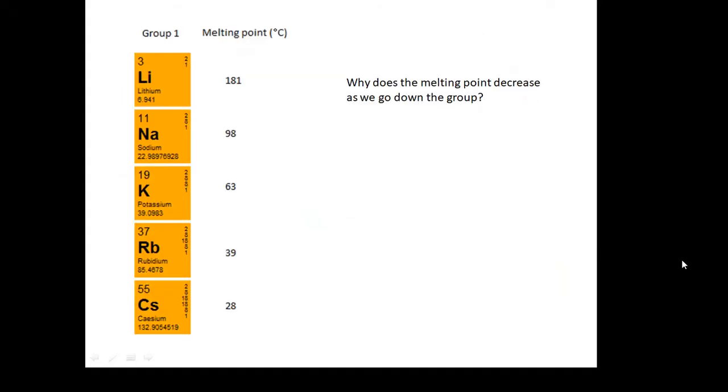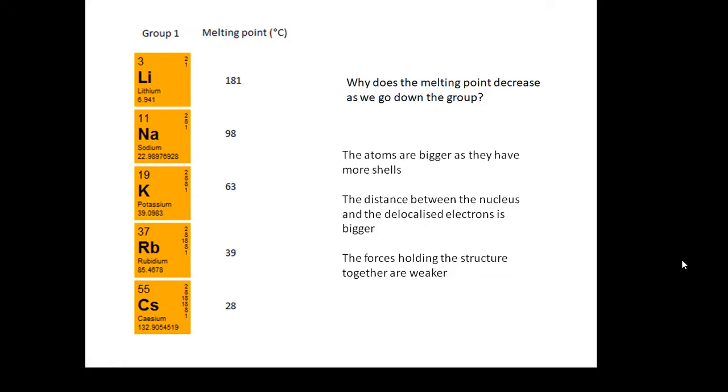A few other things we need to know. Here is Group 1: lithium, sodium, potassium, rubidium, cesium. Look at the melting point—notice that it's getting smaller as we go down the group. Why? It's because the atoms are bigger; you get more and more shells as you go down the group. So the distance between the nucleus and the delocalized electrons is bigger, and the force holding the structure together is weaker. Remember, the electrons were the super glue—if they're further away from the nuclei, the force holding it together will be weaker. So as you go down a group, the melting point gets smaller.